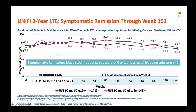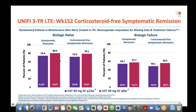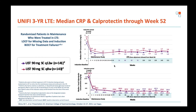Looking at corticosteroid-free remission, it was achieved in the vast majority of patients. Unsurprisingly, patients who had previously failed biologics fared worse than those who were biologic-naive. Examining harder endpoints like CRP and calprotectin, there were robust responses that fit nicely with the symptomatic benefit observed.